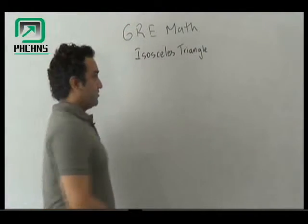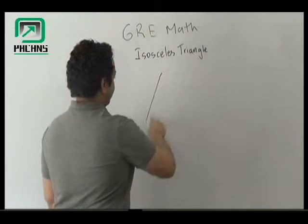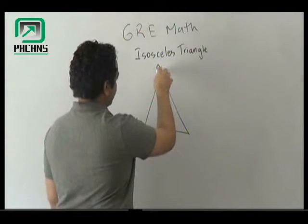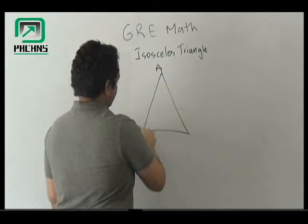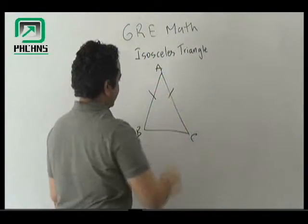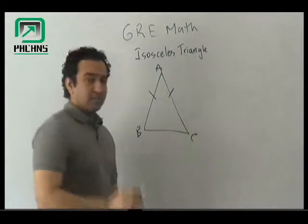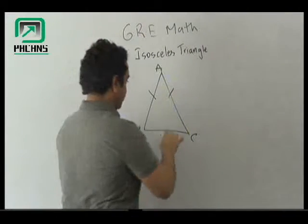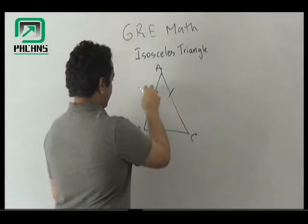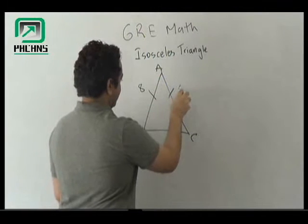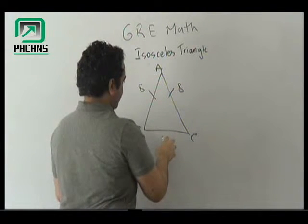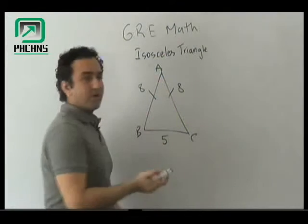An isosceles triangle is a triangle which has two sides equal. So if these two sides are equal — for example, this is 8, this is 8, and this side would be 5 — whatever it is.